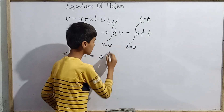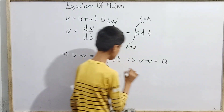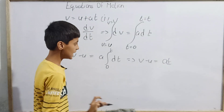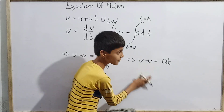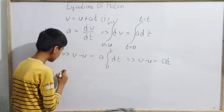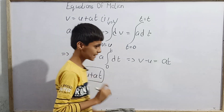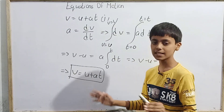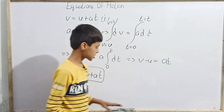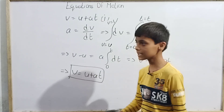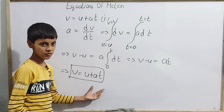After evaluating the definite integral, we get v minus u equals at. Since we need to find the final velocity, we send negative u to the other side — it becomes positive and is added to at. This gives us v equals u plus at. So the final velocity for constant uniform acceleration equals initial velocity plus acceleration into time — our first equation of motion is derived.